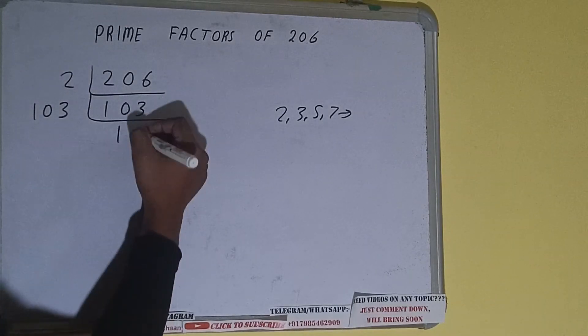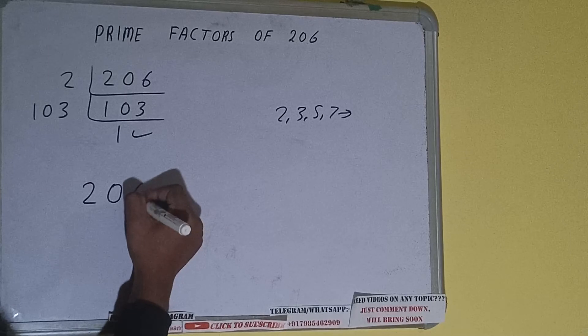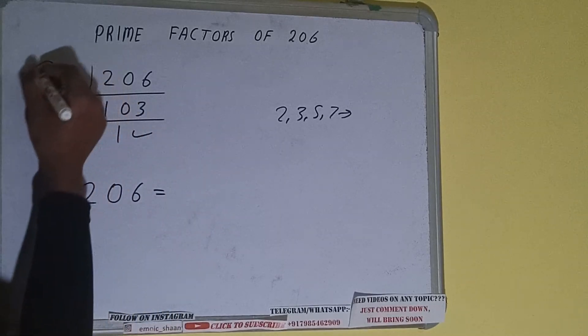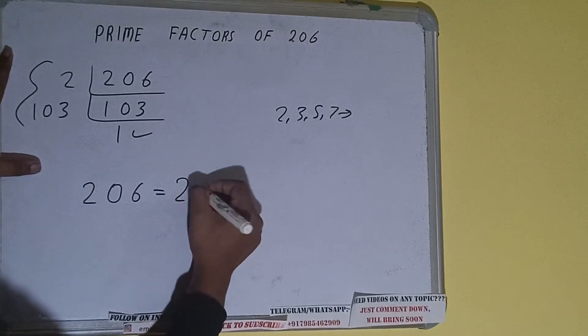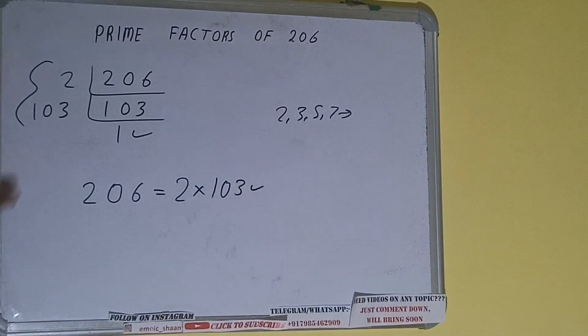Once we get one we need to stop and do one last thing that is prime factor of 206 is equals to multiply whatever we have on the left hand side that is 2 cross 103 that will be the answer.